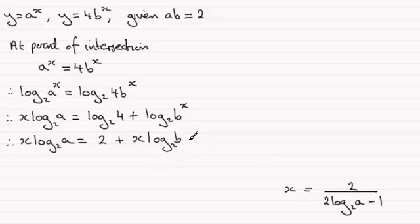Now we need to group together the terms that contain x. So what I'm going to do is take x log of b in base 2 from both sides. So we're going to have x log of a in base 2 minus x log of b in base 2. I'm going to pull out x as a common factor though at this stage. So we'll have x times the log in base 2 of a minus the log in base 2 of b. And that's going to equal the 2 there.